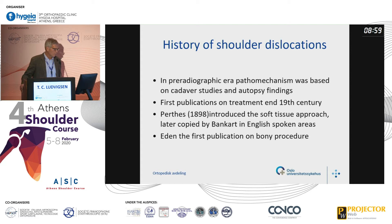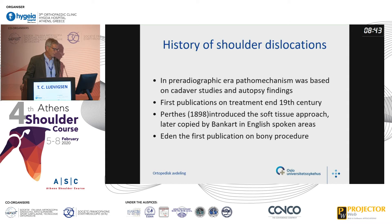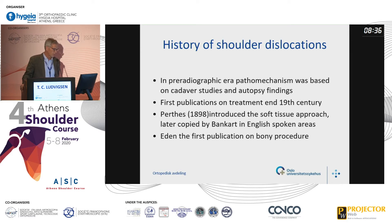The history of shoulder dislocations — we need to look a little bit closer at that, because in the pre-radiographic era, the pathomechanism was based on cadaver studies and autopsy findings. The first publications on treatment came around the end of the 19th century. Pertus introduced the soft tissue approach, which was later copied by Bankart. And Eden published the first description of the bony procedure.